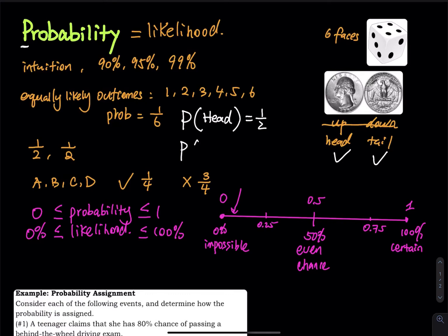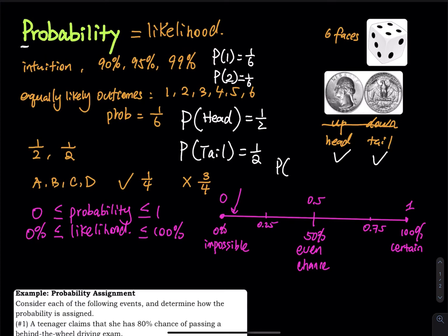The probability that you will get a tail is also one half. If you roll a die, the probability that you will get a one is one over six, and the probability to get any number between one and six is always one over six. If you're well prepared for a test and the probability you will pass is 80%, you write P(pass) = 0.8 or 80%. That is how we use probability notation — the P stands for probability, so you don't need to write a full sentence.